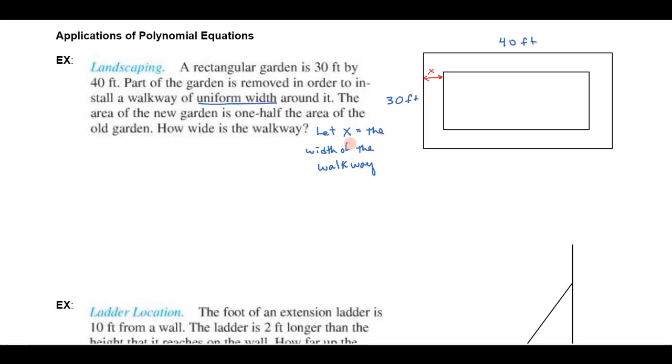Always, always identify what your variable is and write it down so it's very clear in your mind. That's really the key to so many of these application problems, word problems. Now it's going to remove x on every side. It's uniform. So we have this little walkway going around here.